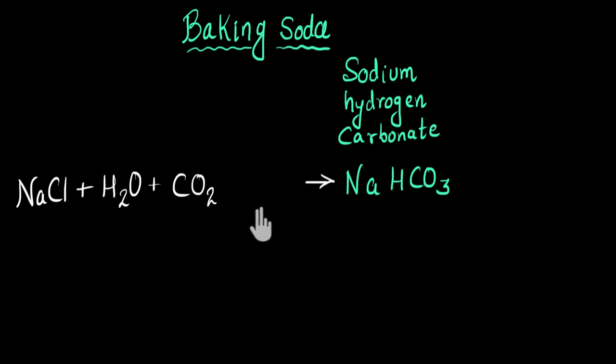But you know what? There is one more ingredient, one more compound that goes into this mixture. And that is our ammonia NH3. So sodium chloride, water, carbon dioxide and ammonia, they all react and NaHCO3 is formed. And with this, we get one more product, NH4Cl, ammonium chloride.